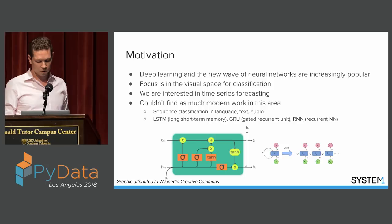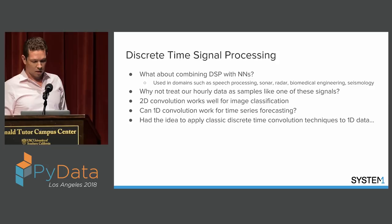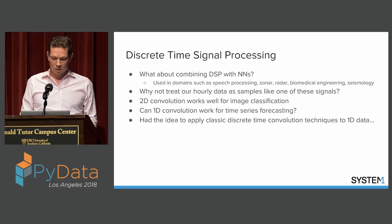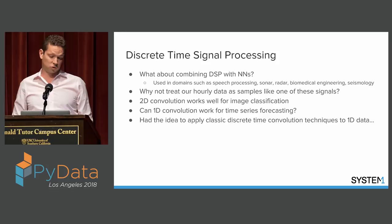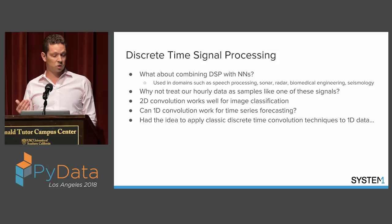I have a background in discrete time signal processing and wondered: can we combine those techniques with neural networks? These discrete time processing techniques have been around for a long time, used in things like speech processing and radar. Why not treat our hourly data samples like one of these signals and apply these techniques, but use neural networks to train the filters? So the question became: the 2D convolution works well for image classification — is there a type of 1D convolution that works for time series forecasting?